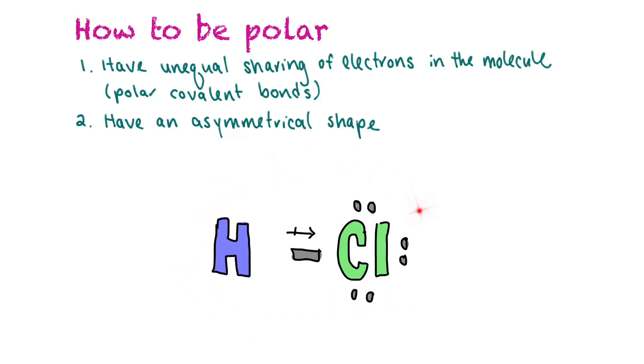chlorine has seven electrons. So if you remember from ionic bonding, that means it wants more. And hydrogen only has one. So chlorine hogs the electron that it's sharing with hydrogen to have the negative dipole. And then hydrogen has a positive dipole.